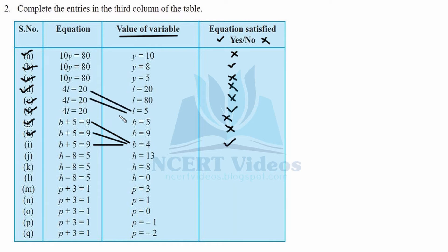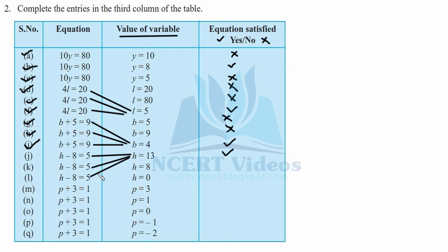We can also confirm that 5 solves the equation 4l equal to 20. What we get from this exercise is that only one solution is possible for any given equation. For h minus 8 equal to 5: placing 13, we get 13 minus 8 equals 5, which matches. So our solution is found in the first case. For confirmation: 8 minus 8 is 0, which is not equal to 5, so we cross it.